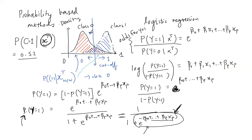Another popular probability-based method is Naive Bayes, which is based on Bayes' theorem. It also assigns a probability value to a particular data attribute, just using a different method of assignment. The approach is the same: you end up with two distributions of probability values and then look for a cutoff. Closely related is the likelihood-based method, which has a subtle difference from probability-based methods.